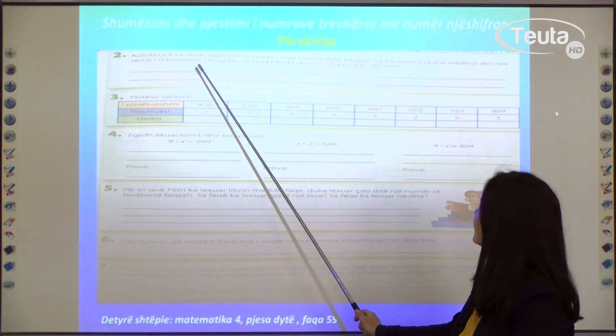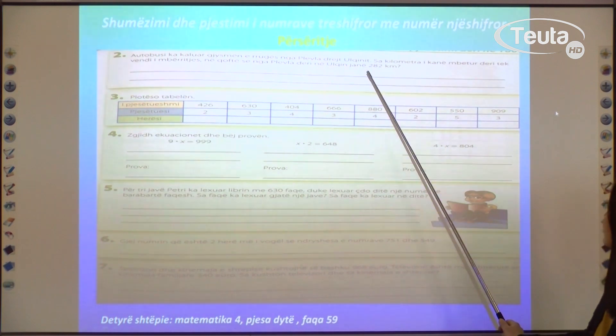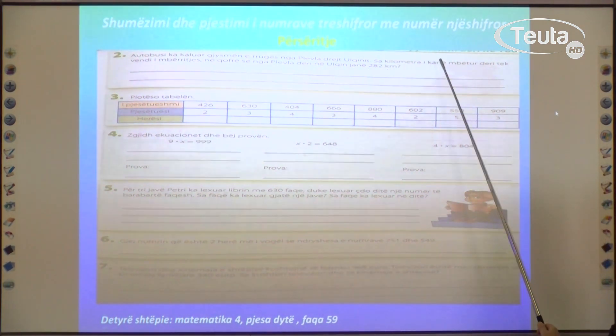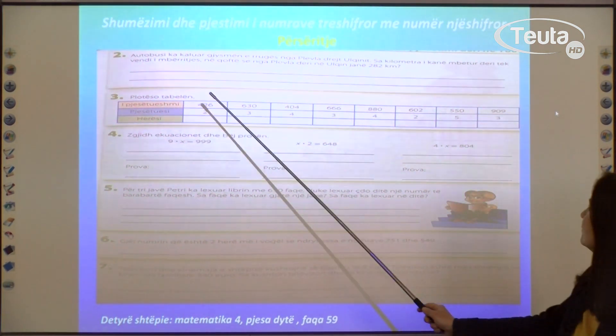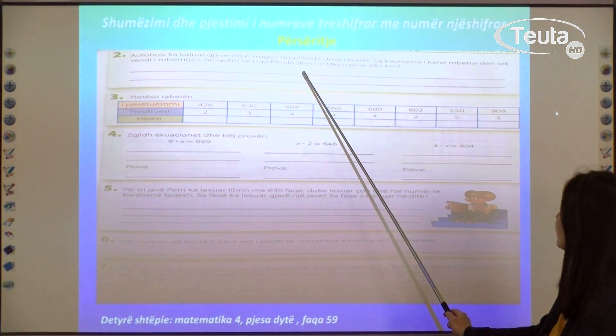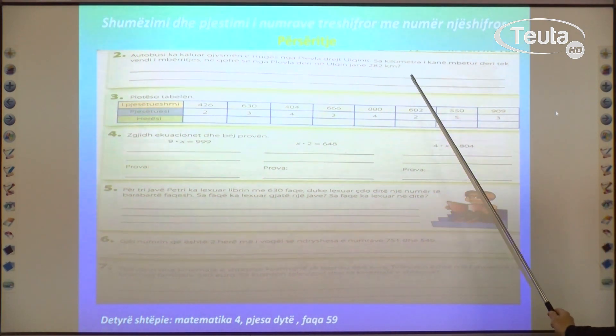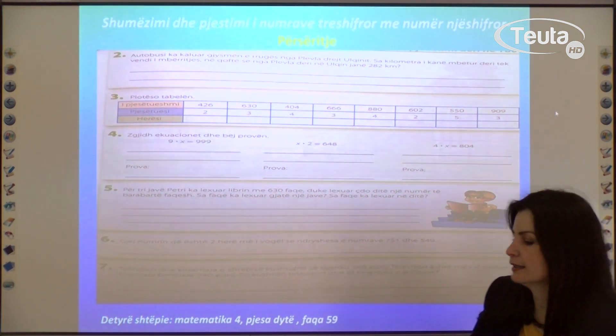The bus has traveled half the route from Plevla towards Ulqin. How many kilometers remain until it reaches its destination if the distance from Plevla to Ulqin is 282 kilometers?